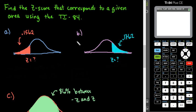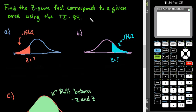Hi, for this video I'm going to show you how to find the Z-score that corresponds to a given area, and we're going to use the TI-84. I have another video that shows you how to do it with the TI-Inspire, and also one that shows you how to do it with the table. But for this one it's the TI-84, so if you have a TI-83 you would also do it the same way.